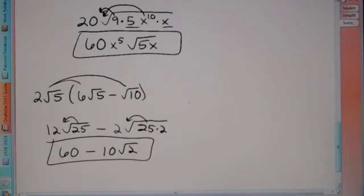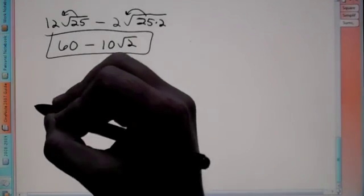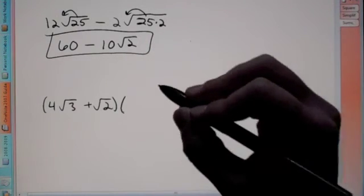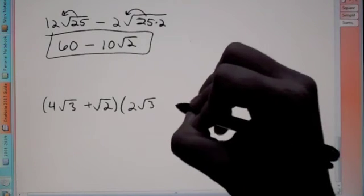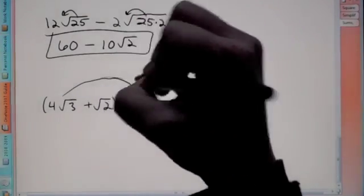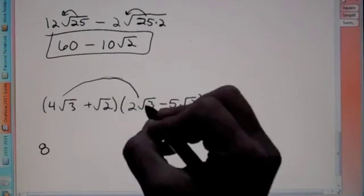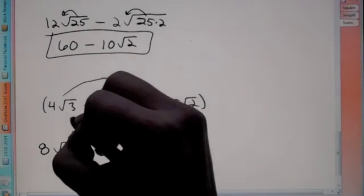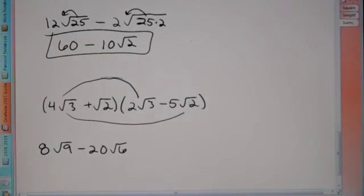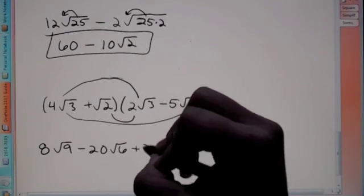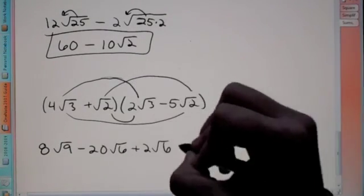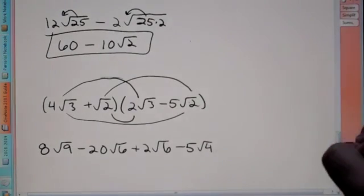Let's do one more problem — we're going to do a little FOILing. We have two parentheses: the quantity 4 root 3 plus root 2, times the quantity 2 root 3 minus 5 root 2. So we FOIL. First: 4 root 3 times 2 root 3 — 4 times 2 is 8, root 3 times root 3 is root 9. Outer: 4 times negative 5 is negative 20, root 3 times root 2 is root 6. Inner: 1 times 2 is 2, root 2 times root 3 is root 6. Last: positive 1 times negative 5 is negative 5, root 2 times root 2 is root 4.